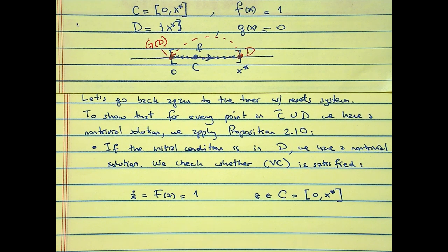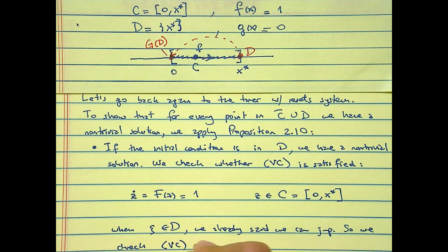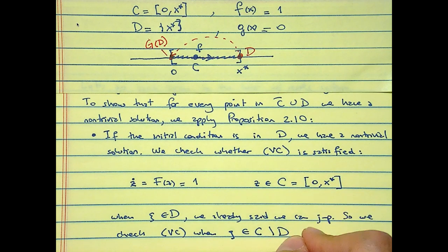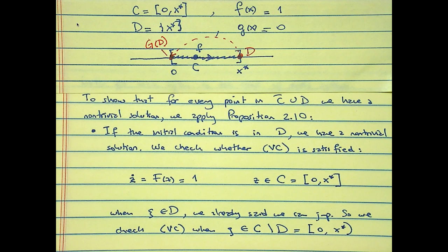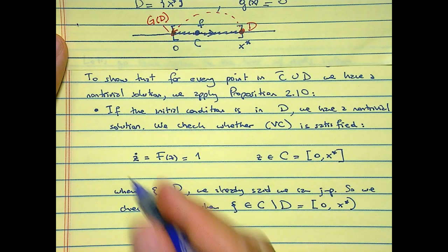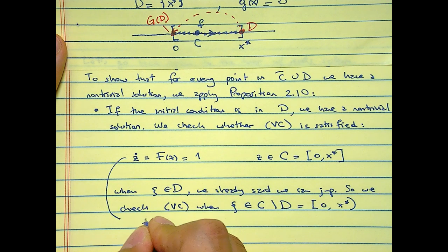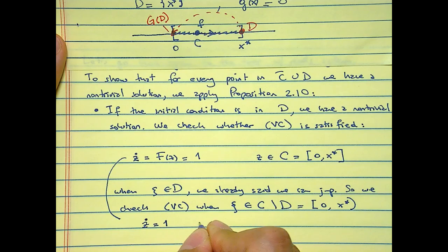When C is in D we already say we can jump. So we check VC when C is in C minus D, which is what? 0 to X star.